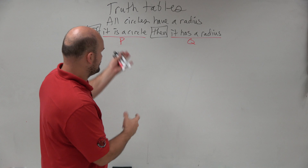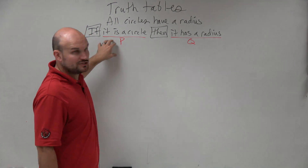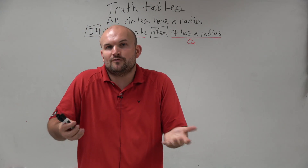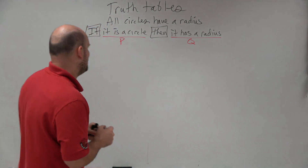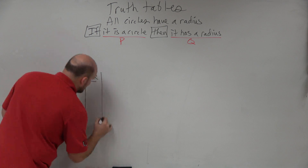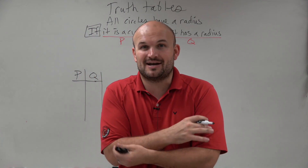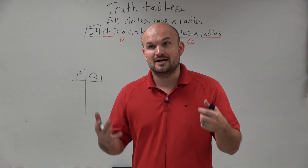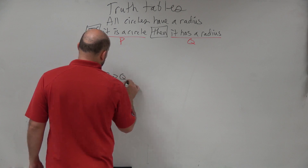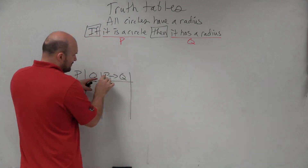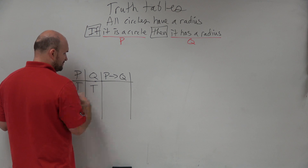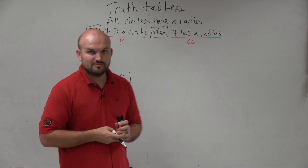If we're looking at the statement as true — if it is a circle, that's true, and it has a radius, which is also true — then the truth of that statement is true. So p represents any hypothesis, q represents any conclusion, and the conditional form is if p then q, which we write as p arrow to q. If both p and q are true, the statement is true.